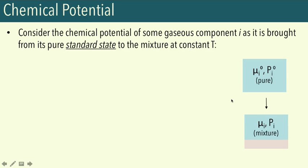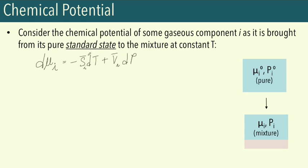As our gas undergoes this process, recall the expression relating changes in mu with changes in temperature and pressure: d-mu-i equals negative S dT plus V dP, where S is the molar entropy and V is the molar volume. For our particular process at constant temperature, dT becomes zero, so d-mu-i equals Vi dP. In our first consideration, let's consider an ideal gas. For an ideal gas, PV equals nRT, so the molar volume is RT over Pi.